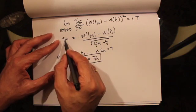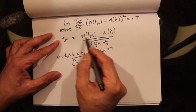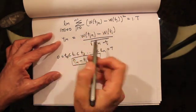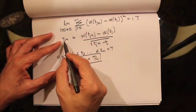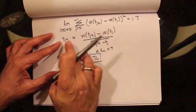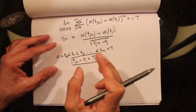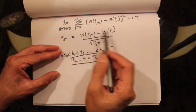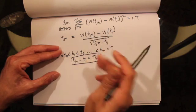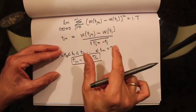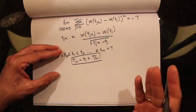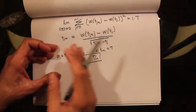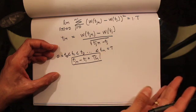Since Y_{j+1} is defined as an increment of Brownian motion, all of the Y_{j+1} random variables are independent of one another, because non-overlapping increments of Brownian motion are independent of one another.